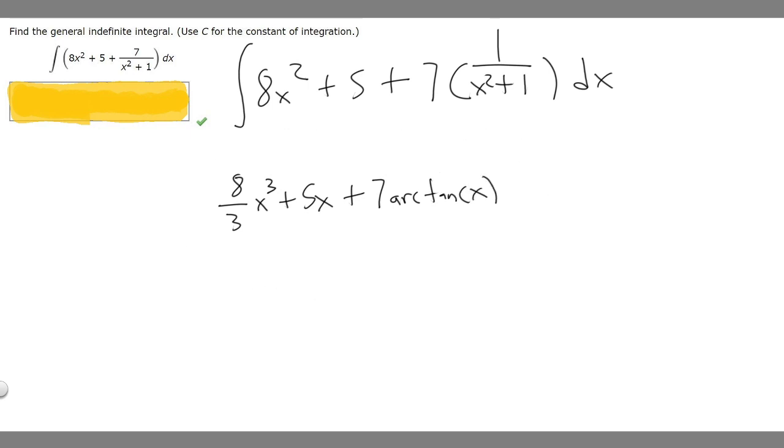Now we've got to add a constant, because whenever you take the antiderivative of a function, you've got to add your constant, so we're using C. The final answer for this problem is 8 over 3 times x cubed plus 5x plus 7 times the arctangent of x plus C.